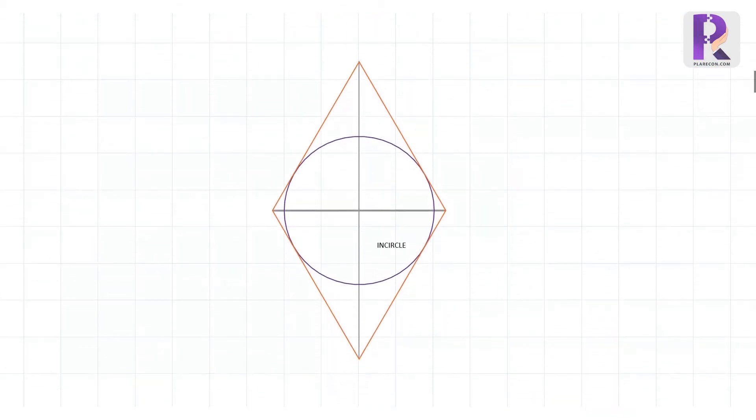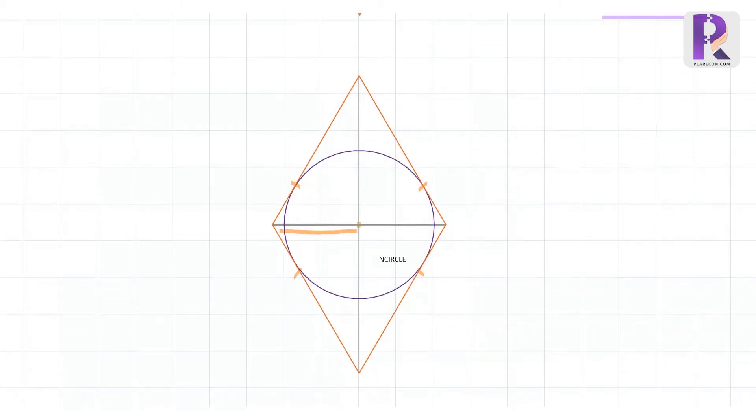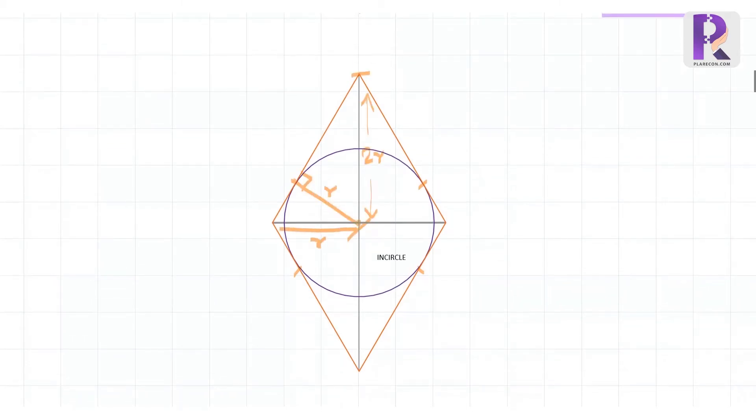Additionally, an incircle can be drawn inside every rhombus touching each side tangentially, with its center at the junction of the two diagonals. In case of a 60-degree rhombus, the radius of this circle is one-fourth that of the long diagonal. If you wish to know how we calculated these values and what's the use of the same, do subscribe to this channel for further videos.